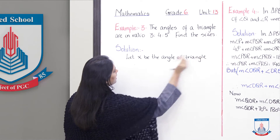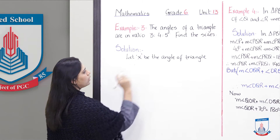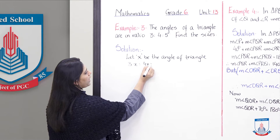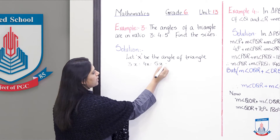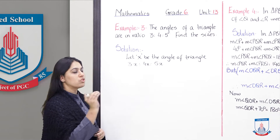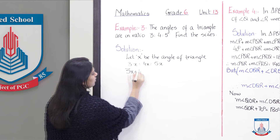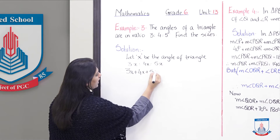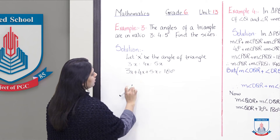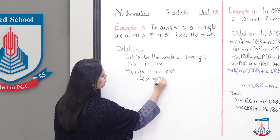We suppose x because we do not know their measurement, so x be the angle of the triangle. The angles are 3x, 4x, and 5x. Now, students, you know that the sum of the interior angles of a triangle is equal to 180 degrees. So: 3x + 4x + 5x = 180 degrees. Adding them together gives 12x = 180 degrees.